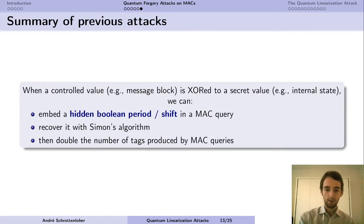So all these previous attacks on MACs, they consisted all in finding out a hidden period problem. And this usually happens because there is a control value, in our case the AD blocks, which is absorbed to a secret value, in our case the offsets. And you can use this hidden period problem as a recovery of this internal secret value. And once you have that, then usually this can yield some internal collision which increases the number of tags you can produce by MAC queries and completely breaks the unforgeability.